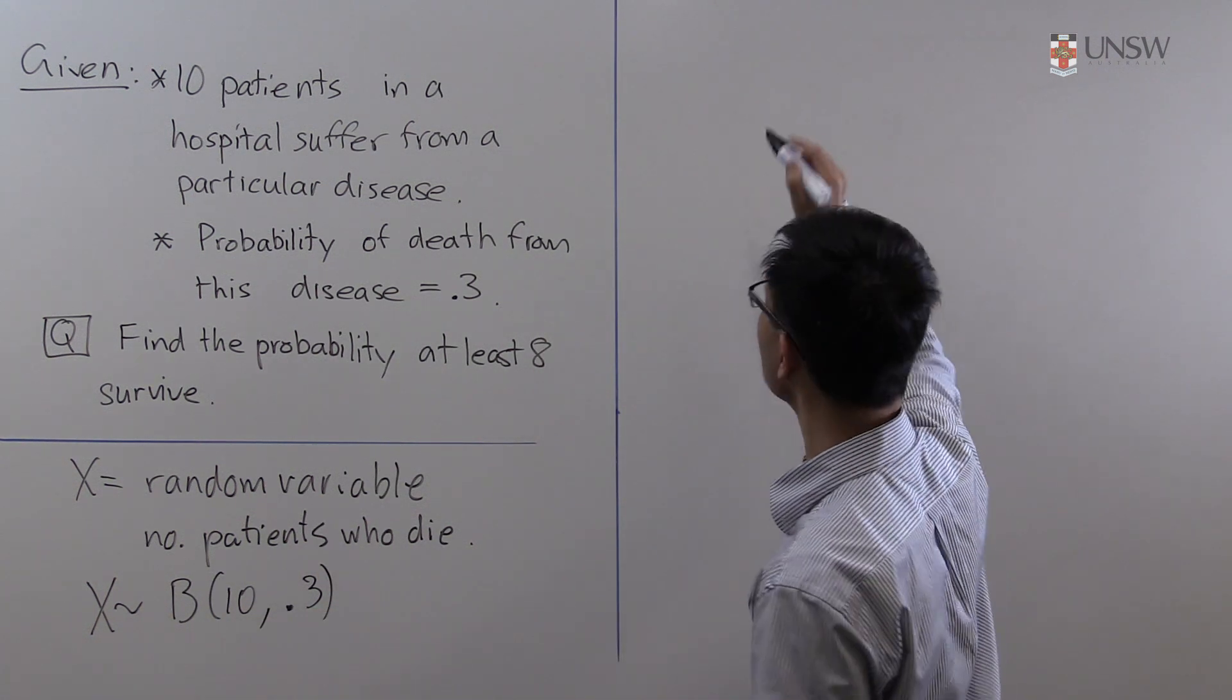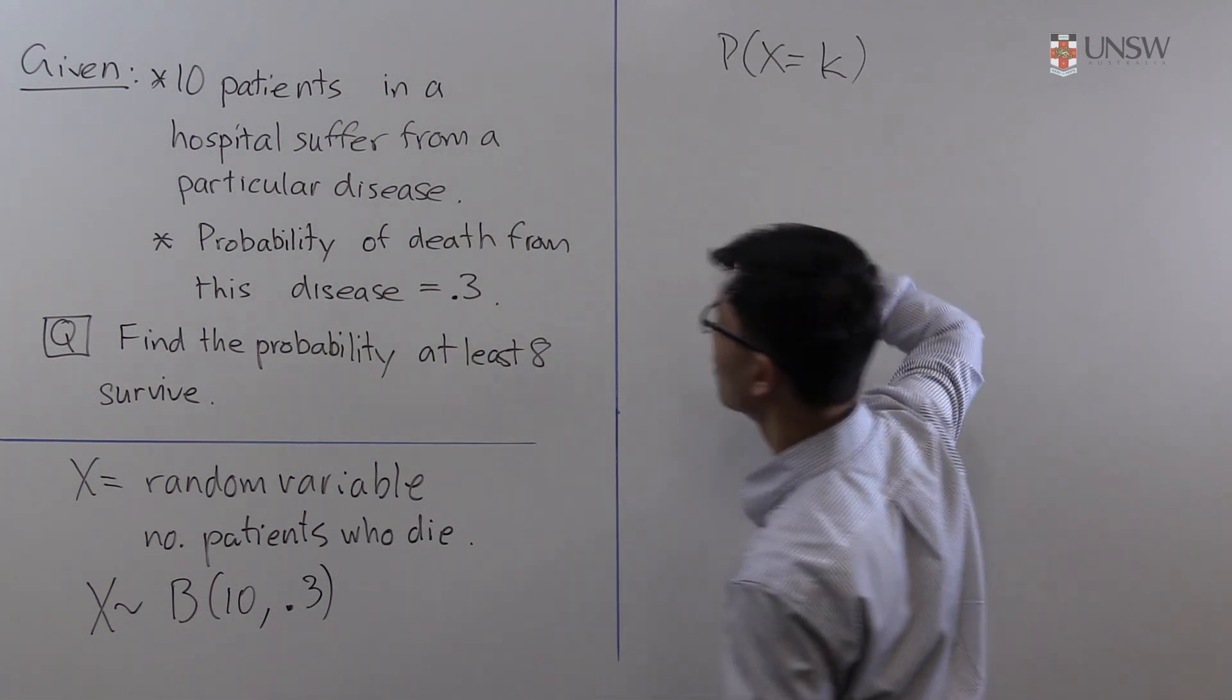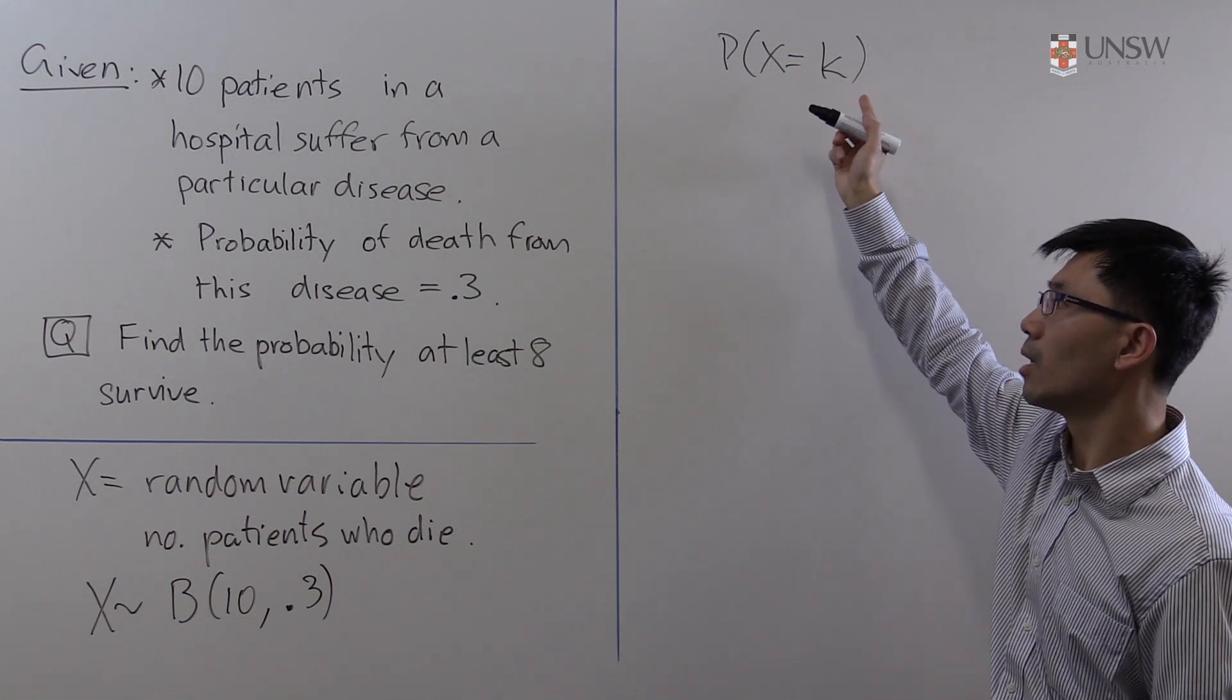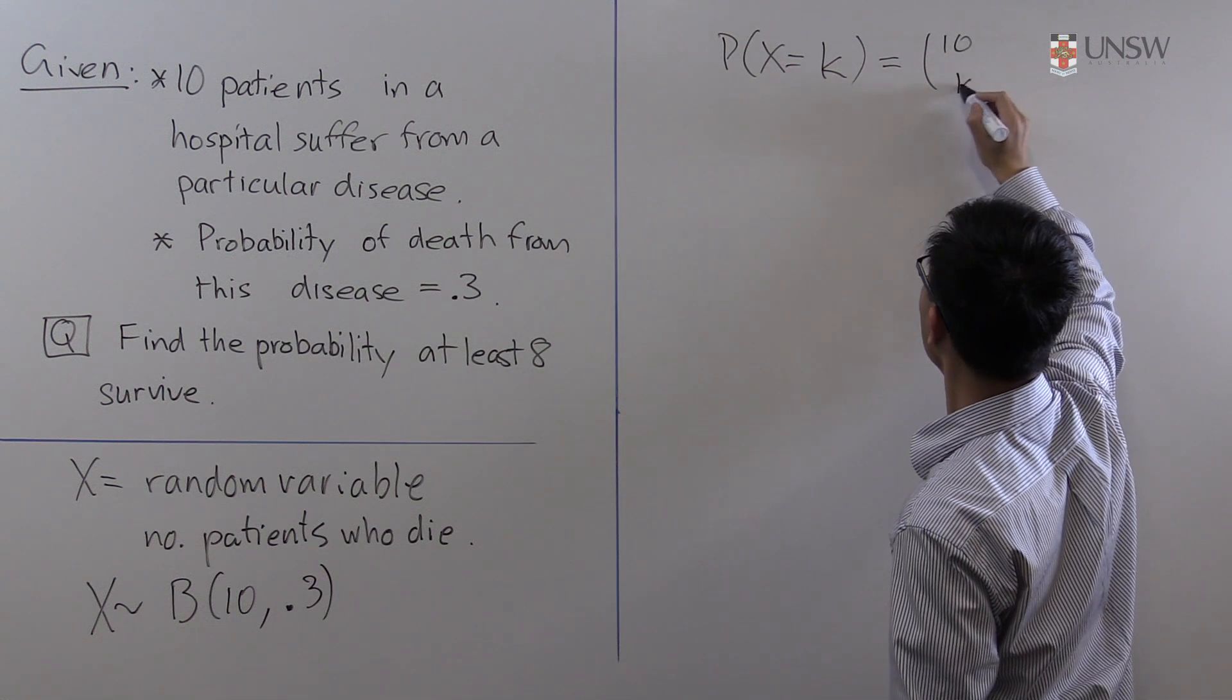That means the probability that X equals k, in other words the probability that k of these ten patients will die, is equal to 10 choose k times 0.3 to the k